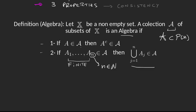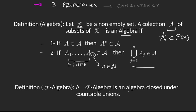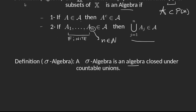Before going into examples, let's define the sigma algebra, which is the structure we're going to be using most of the time. A sigma algebra is an algebra, but it is closed under countable unions. So property number two for an algebra said the algebra is closed under finite unions — we grab any finite number of elements and their finite union is there. A sigma algebra says the same happens but with countable unions.